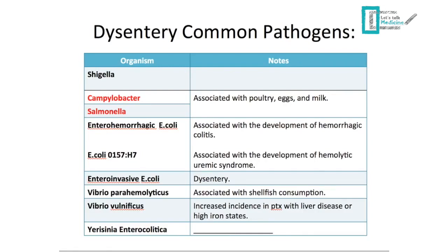E. coli O157:H7 is a specific serotype associated with the development of hemolytic uremic syndrome, involving lysis of red blood cells. Importantly, never give antibiotics or platelets in this condition — antibiotics increase red blood cell lysis, and platelets give the bacteria more to work on. Enteroinvasive E. coli also causes dysentery. Vibrio parahaemolyticus is associated with shellfish consumption, and Vibrio vulnificus has increased incidence in patients with liver disease or elevated iron status, because it thrives on iron. Yersinia species are also relevant.